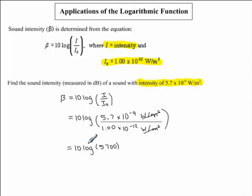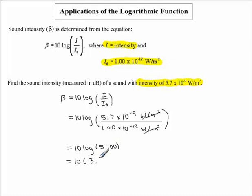Now we use our calculators to determine the logarithmic function of 5,700, rounding to three significant figures. We have 10 times — the logarithmic function of 5,700 rounded to three significant figures is 3.76. So 10 times 3.76 is equal to 37.6.